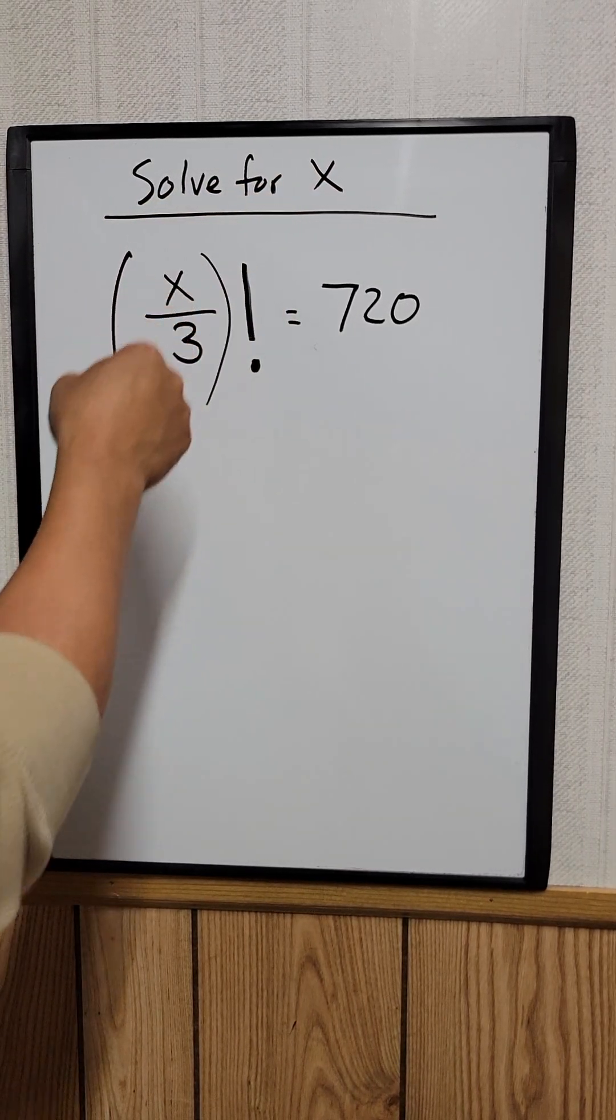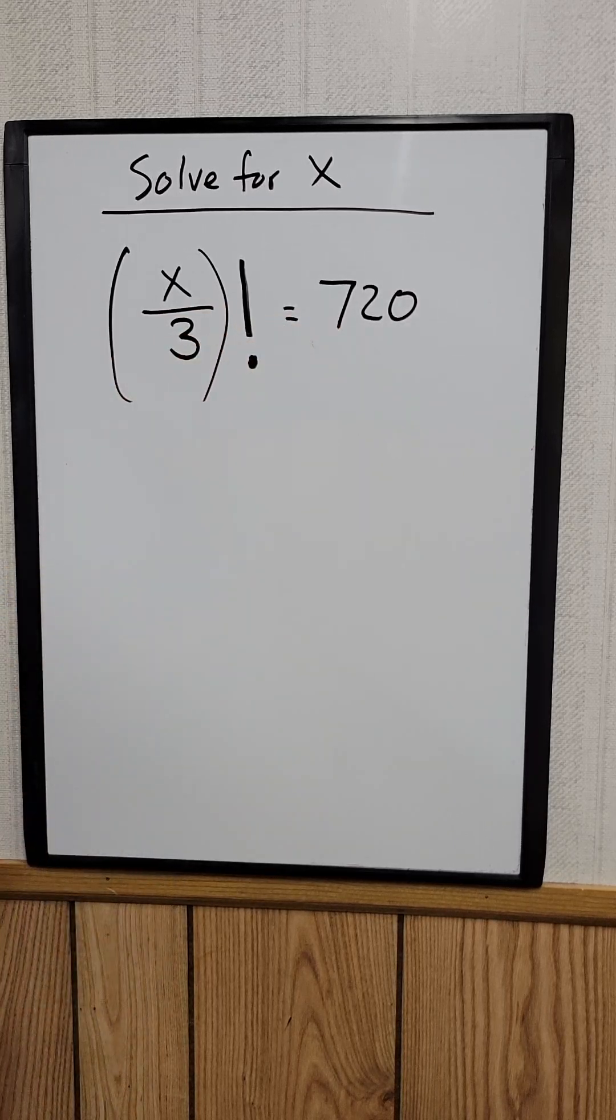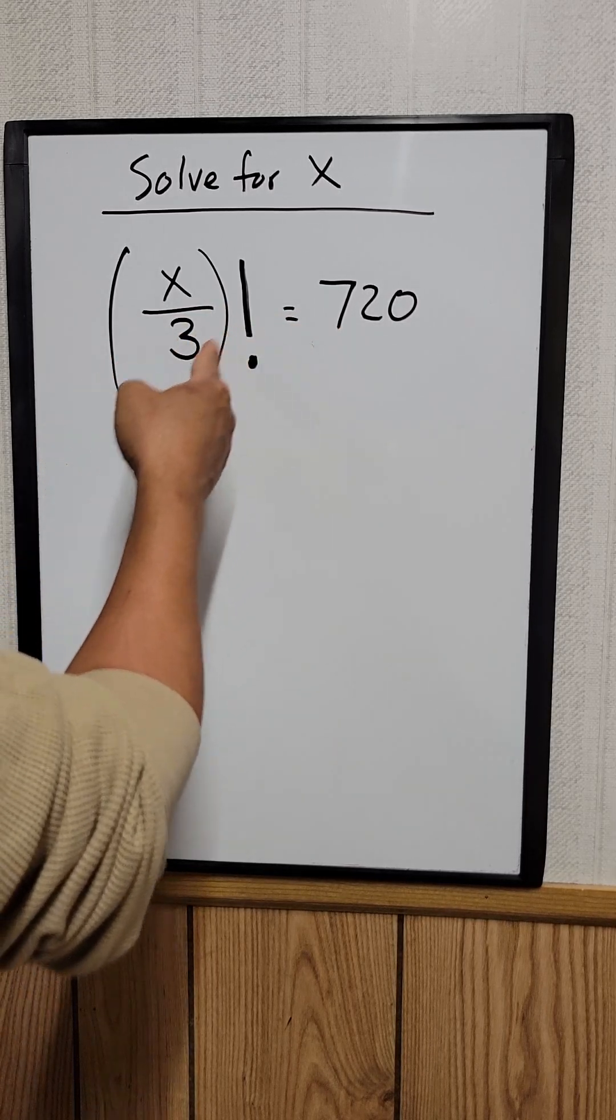Solve for x for this equation right here. x divided by 3 factorial equal to 720. So what is x equal to?